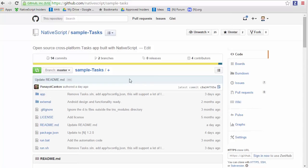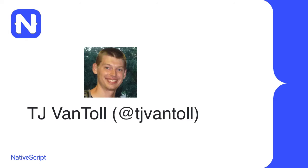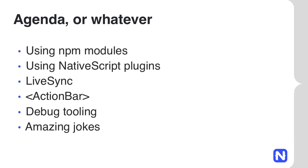Now I want to give the mic to our developer evangelist TJ, who will show you some real demos of how these new features fit together. I'm TJ from Lansing, Michigan — I work for Telerik with the NativeScript team. I'll be showing off features shipped in the last two NativeScript releases: 1.1, which shipped about four or five weeks ago, and 1.2, which landed last week. I'm going to build a small NativeScript app to show these features in action, starting with using NPM modules.